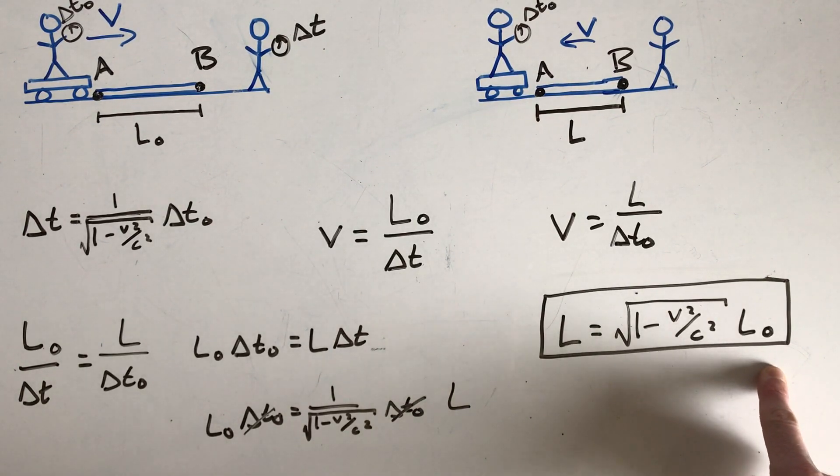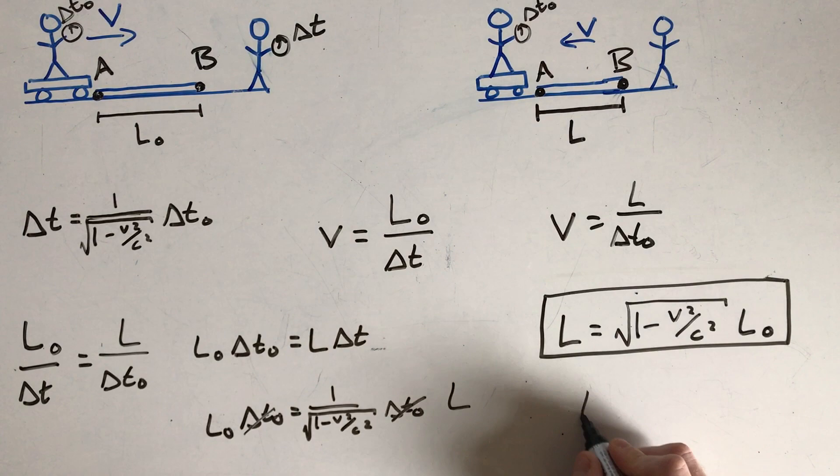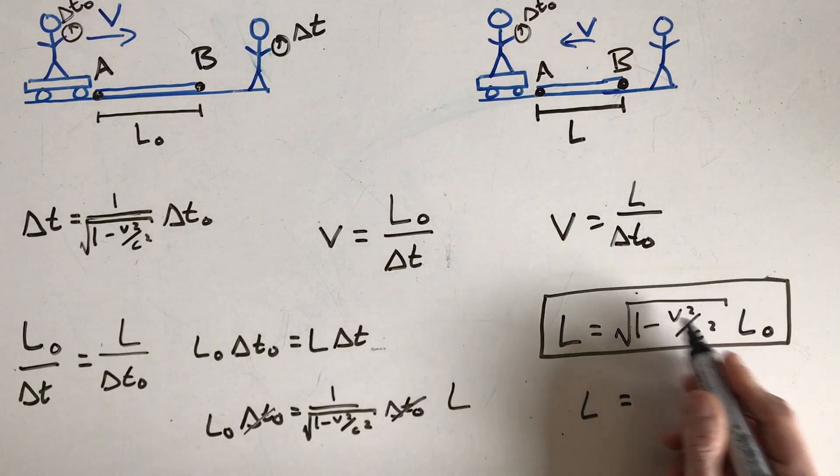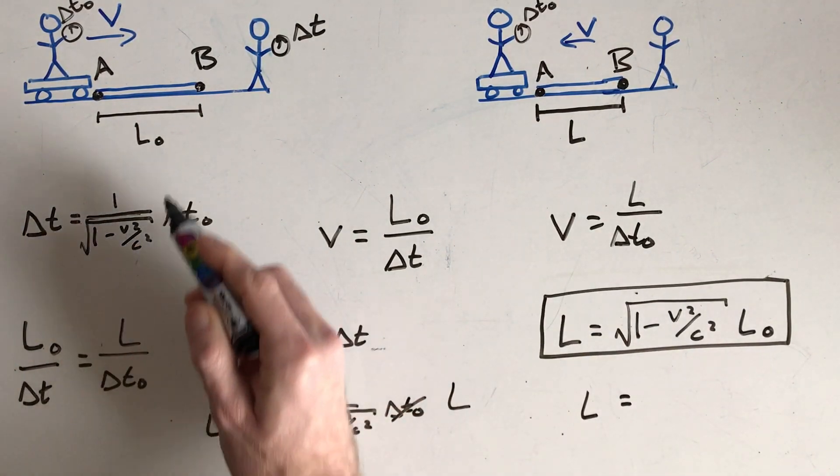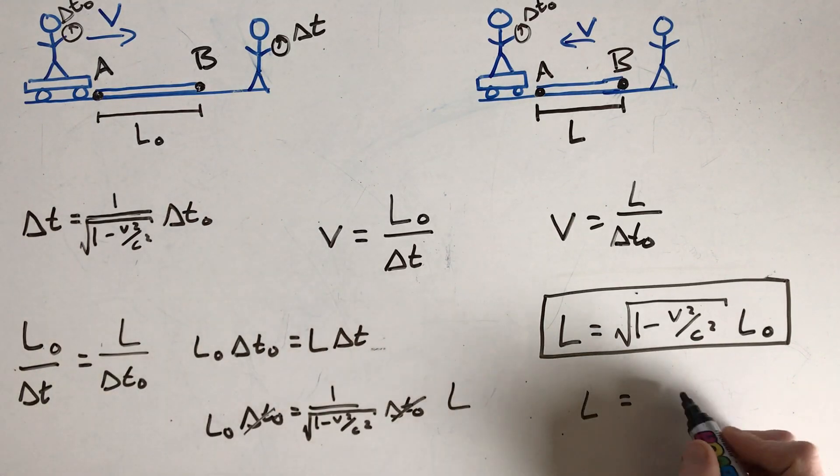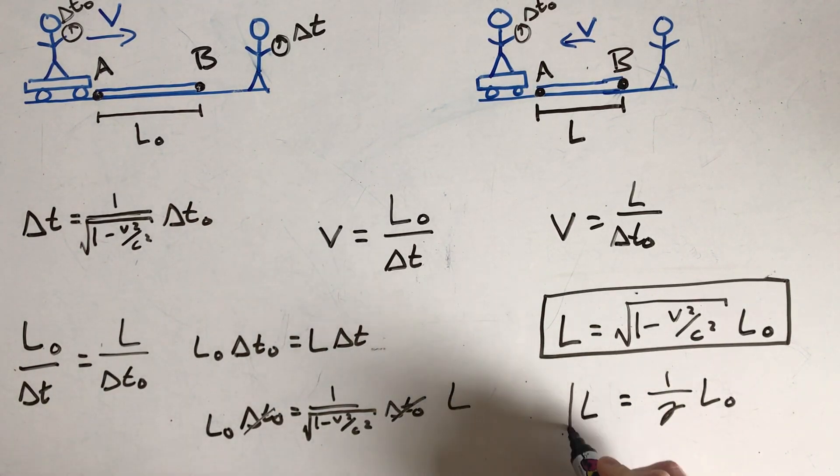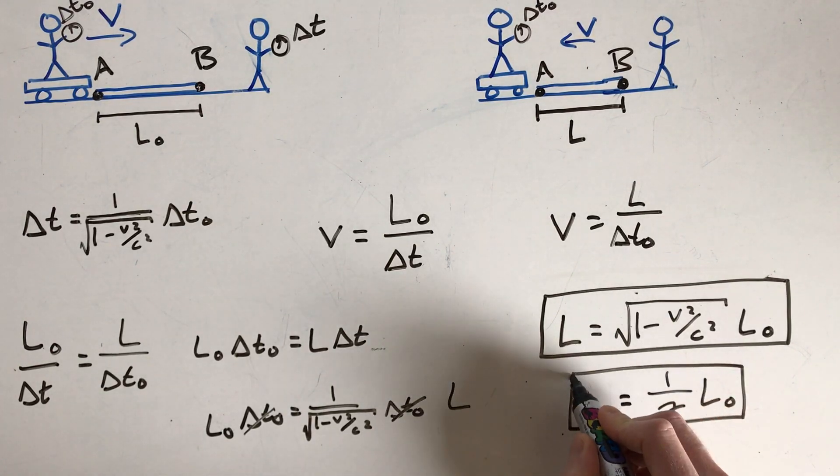And if we wanted to write it in terms of gamma, this is basically 1 over gamma. This whole factor here was gamma. So we could write it like this, 1 over gamma times L naught, sort of the shorthand form.